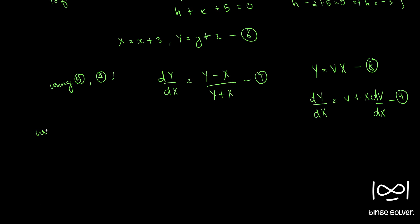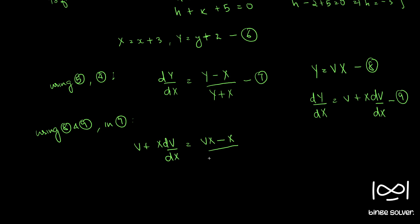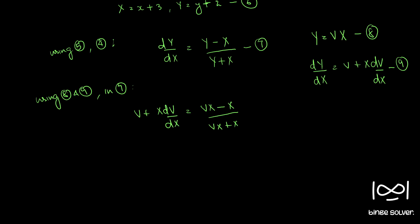Differentiating equation 8 with respect to X, we get dY by dX equal to v plus X dv by dX — call this equation 9. Using equations 8 and 9 in equation 7, we have v plus X dv by dX equal to (vX minus X) by (vX plus X).